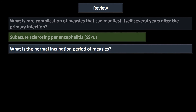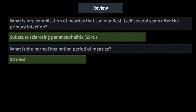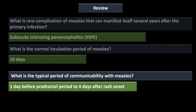The normal incubation period of measles is about 10 days from exposure to onset of symptoms. The typical period of communicability is one day before the prodromal period — that is, one day before the fever and three C's — through four days after the onset of rash. That is the window during which a person is contagious.